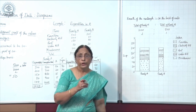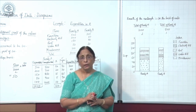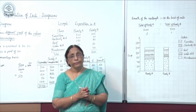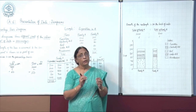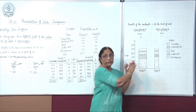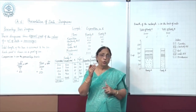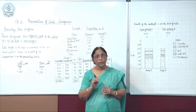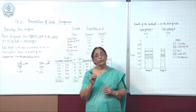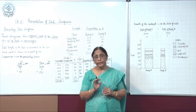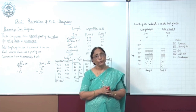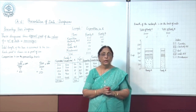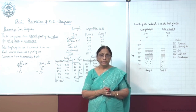Now, what is the basic difference between the subdivided bar diagram and the percentage bar diagram? In the subdivided bar diagram, comparison is two-dimensional — you compare the parts as well as the whole. But in the percentage bar diagram, you cannot compare the whole because the whole is always 100 in percentage. You can only compare values in terms of percentages or subdivisions, not on an absolute basis.